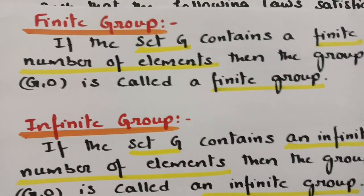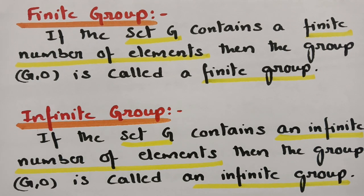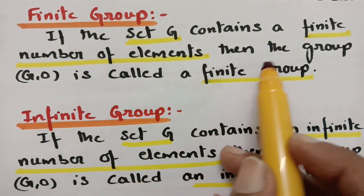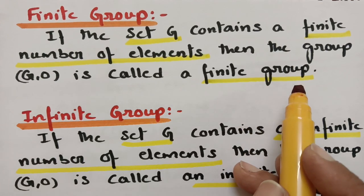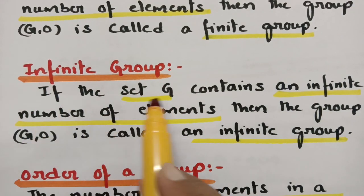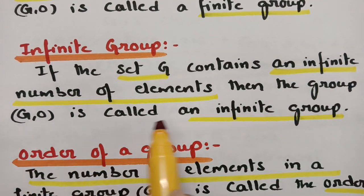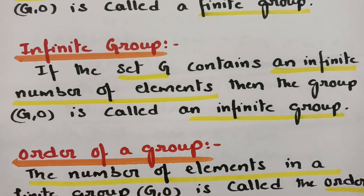What is a finite group? Finite means countable. If a set G contains a finite number of elements, then the group (G, circle) is called a finite group. What is an infinite group? If the set G contains an infinite number of elements, then the group (G, circle) is called an infinite group.